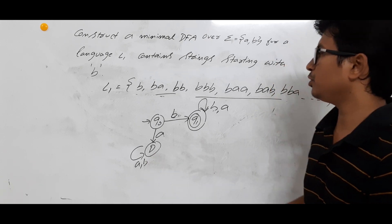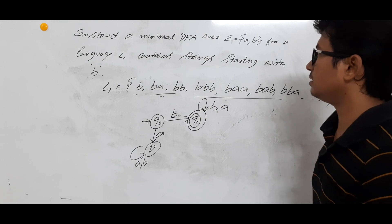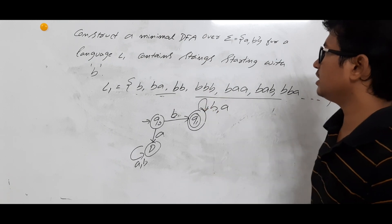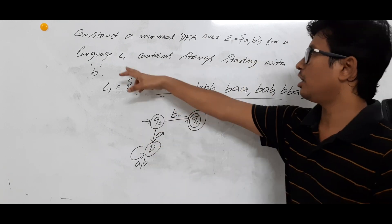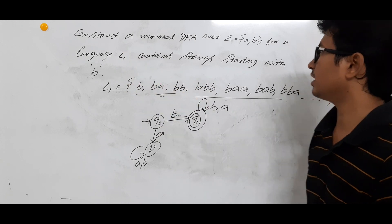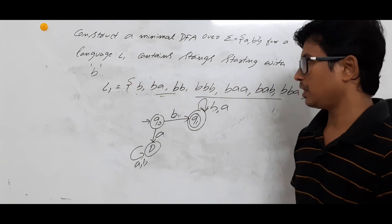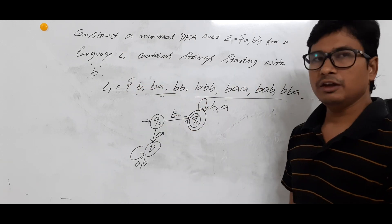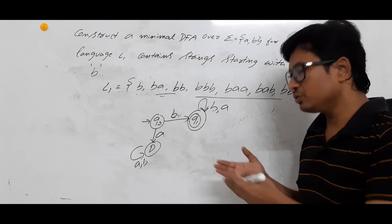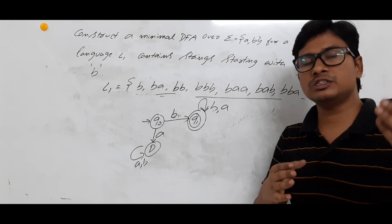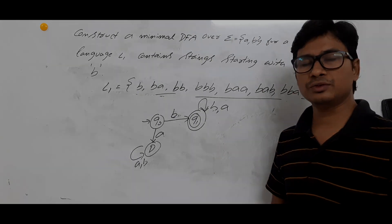I hope you have understood how to construct the minimal DFA over alphabets A and B for language L1 containing strings starting with B. If you did not understand, please watch the video again and also refer to the previous videos. Thank you so much.